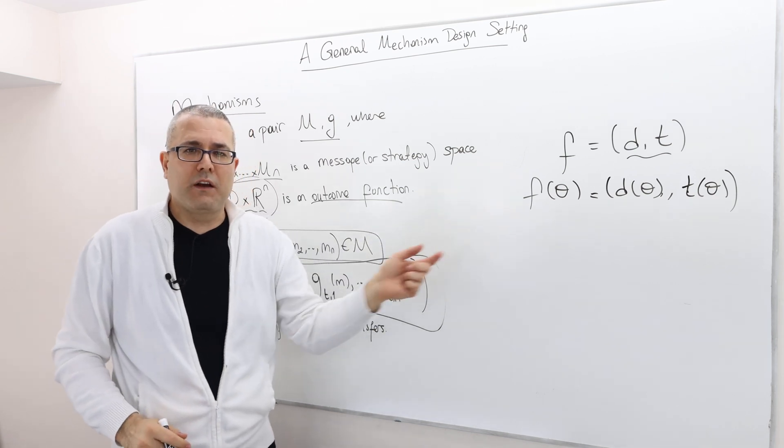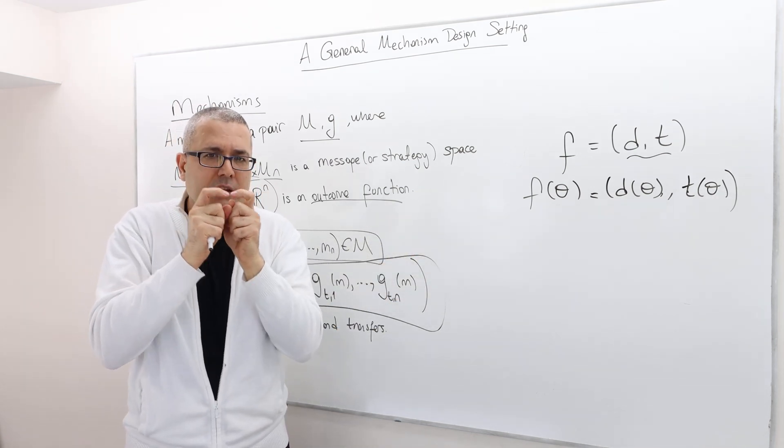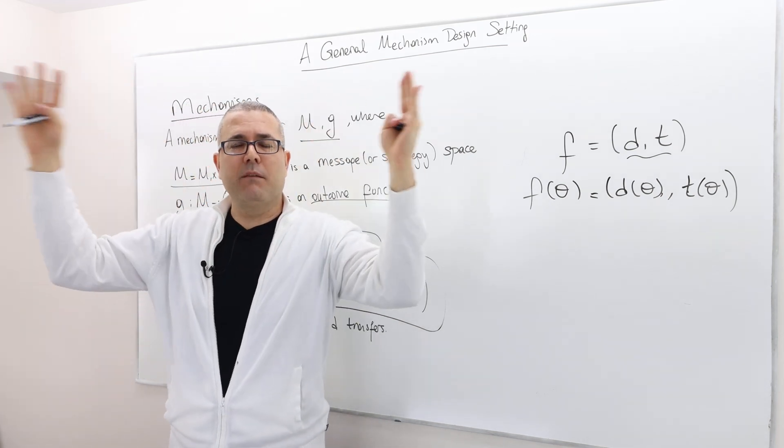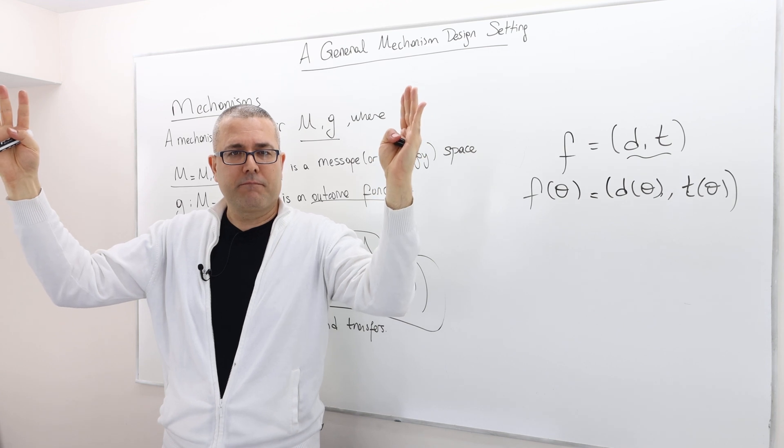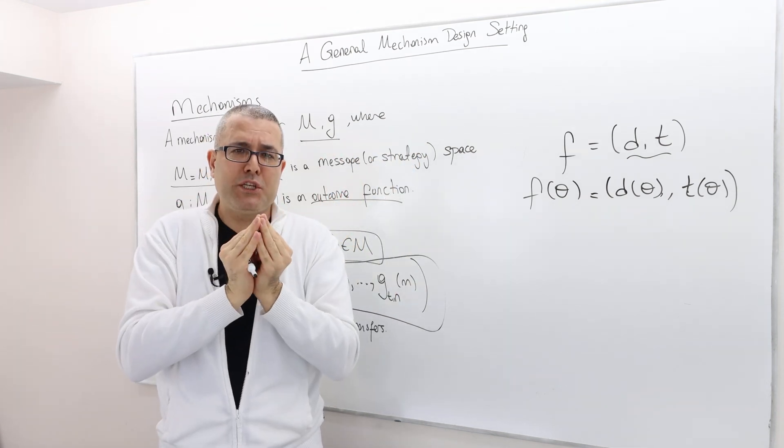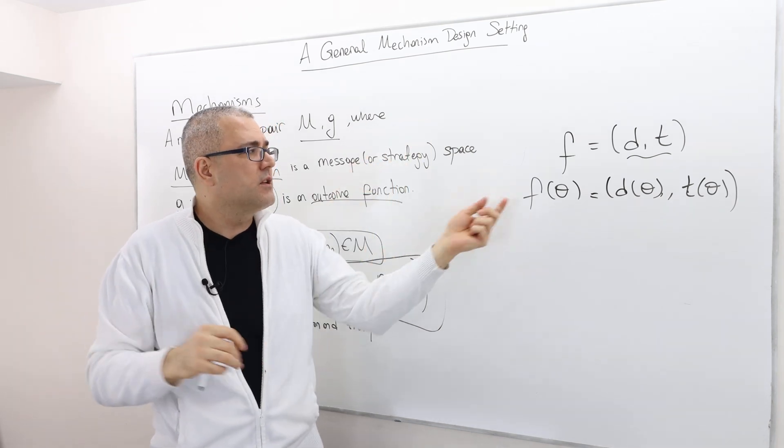So the social choice function is a machine, a smaller machine. Think it this way. So mechanism design is a big machine that we're trying to build. All right. And social choice is a smaller machine that will play an important role in this bigger machine.